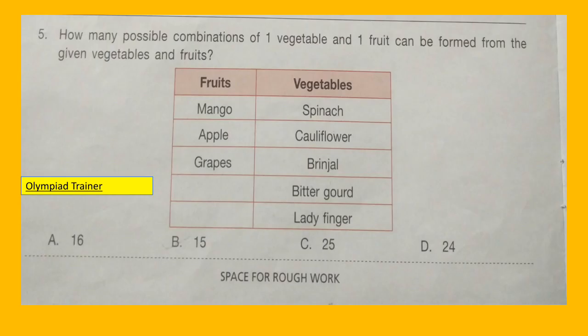Question 5: How many possible combinations of one vegetable and one fruit can be formed from the given vegetables and fruits? The fruit and vegetable table is given and the options are A: 16, B: 15, C: 25, D: 24.